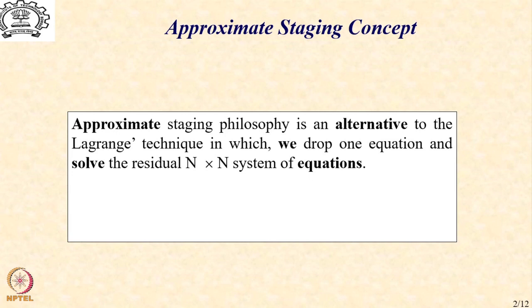This is the first step which means that among the n plus 1 equations and n plus 1 unknowns, we drop one equation so that we do not have to include the Lagrange variable lambda that we have been doing earlier.